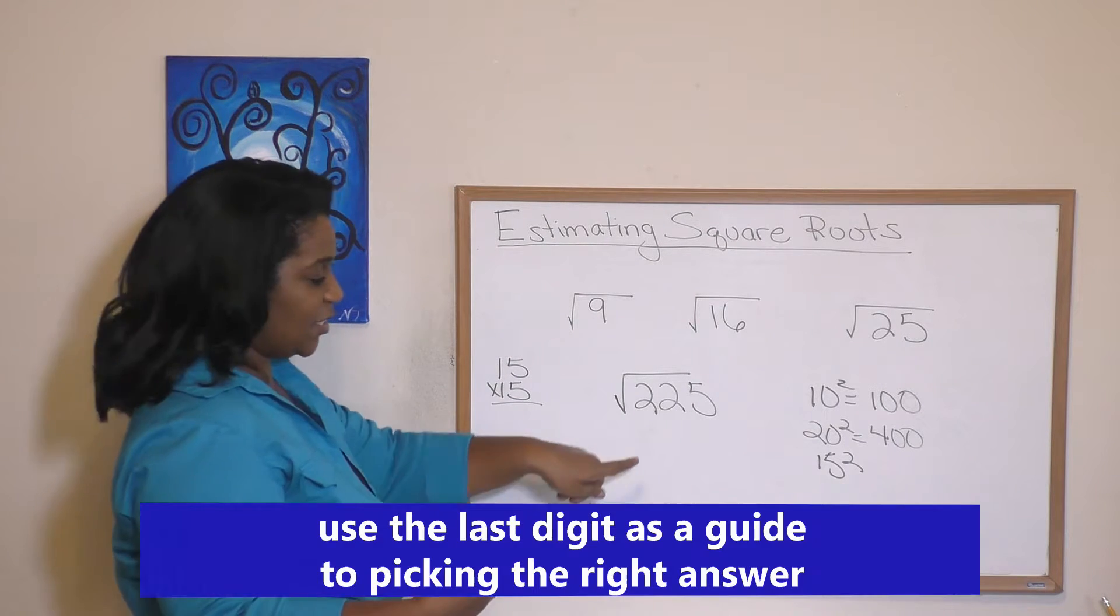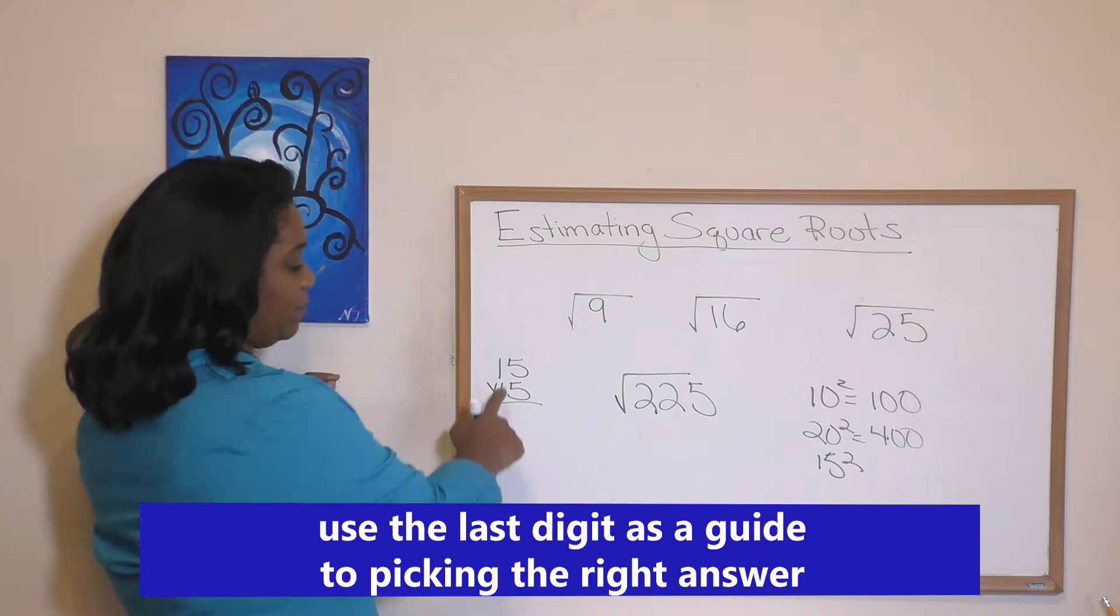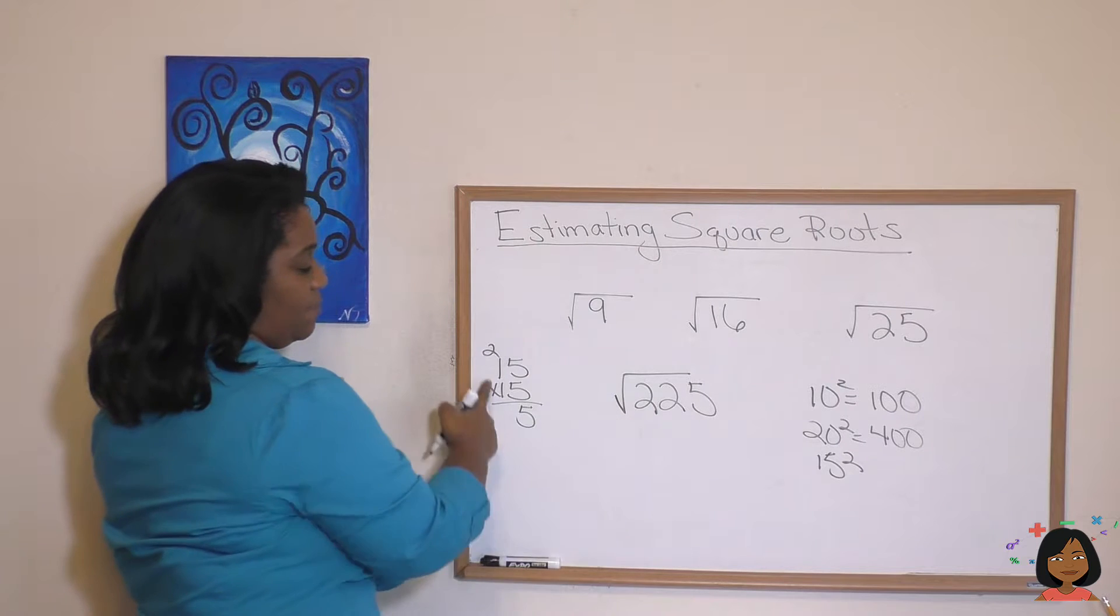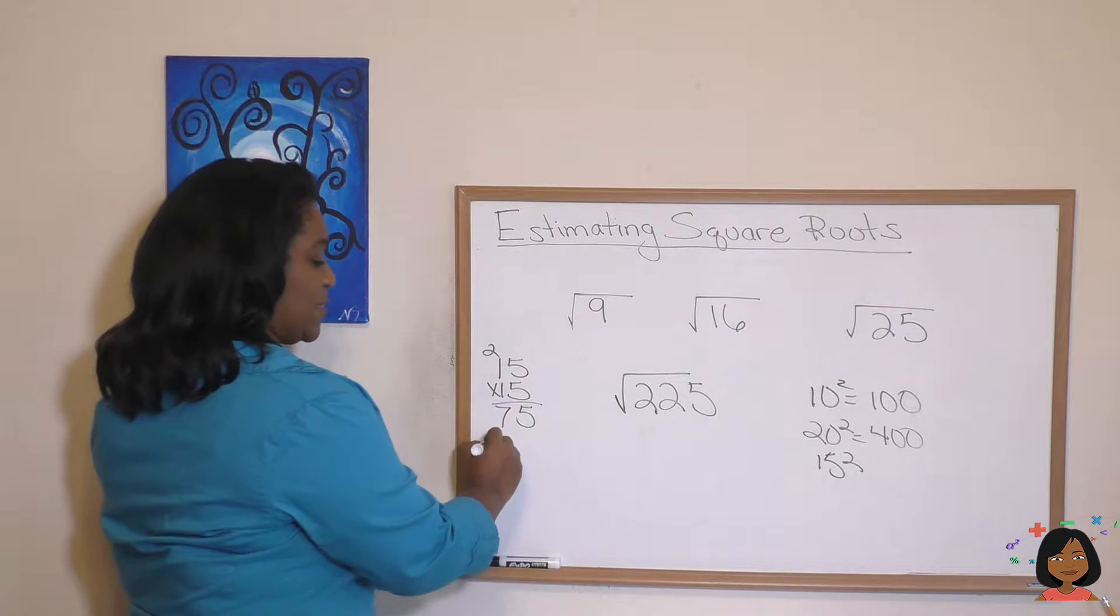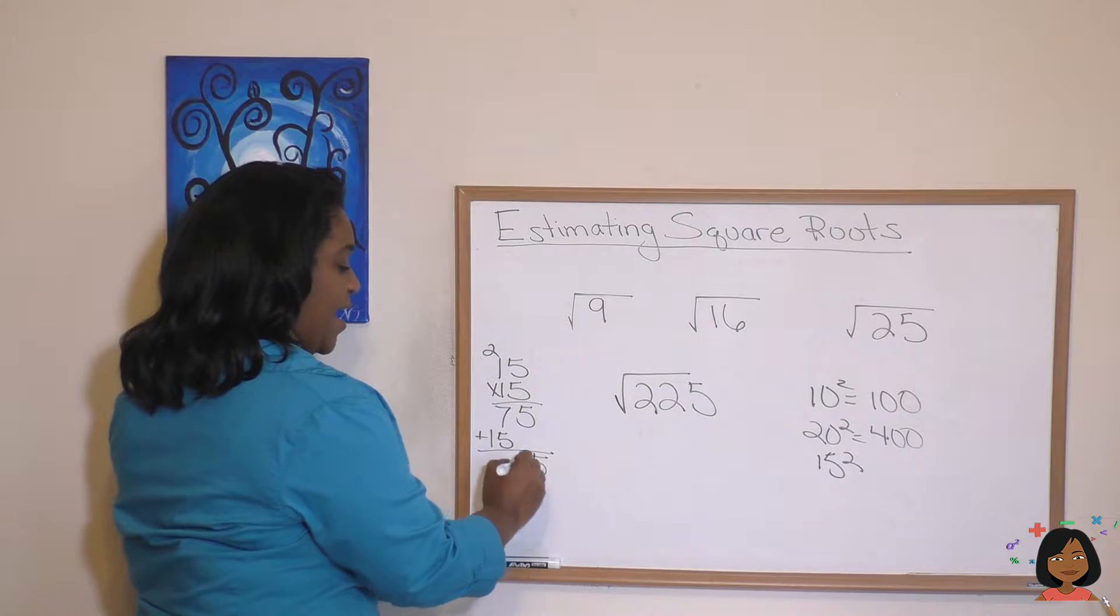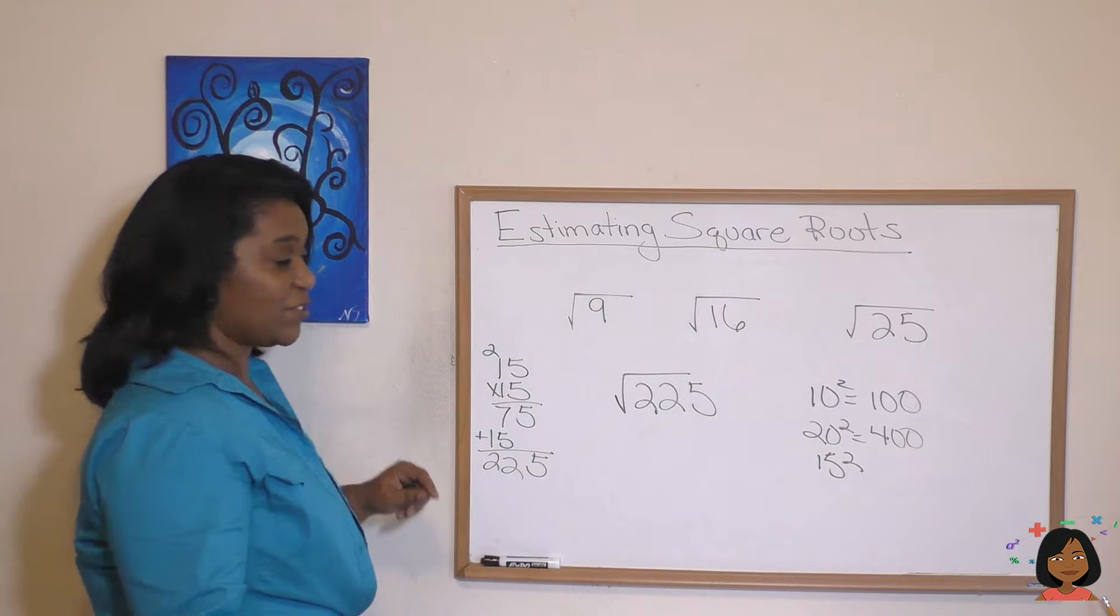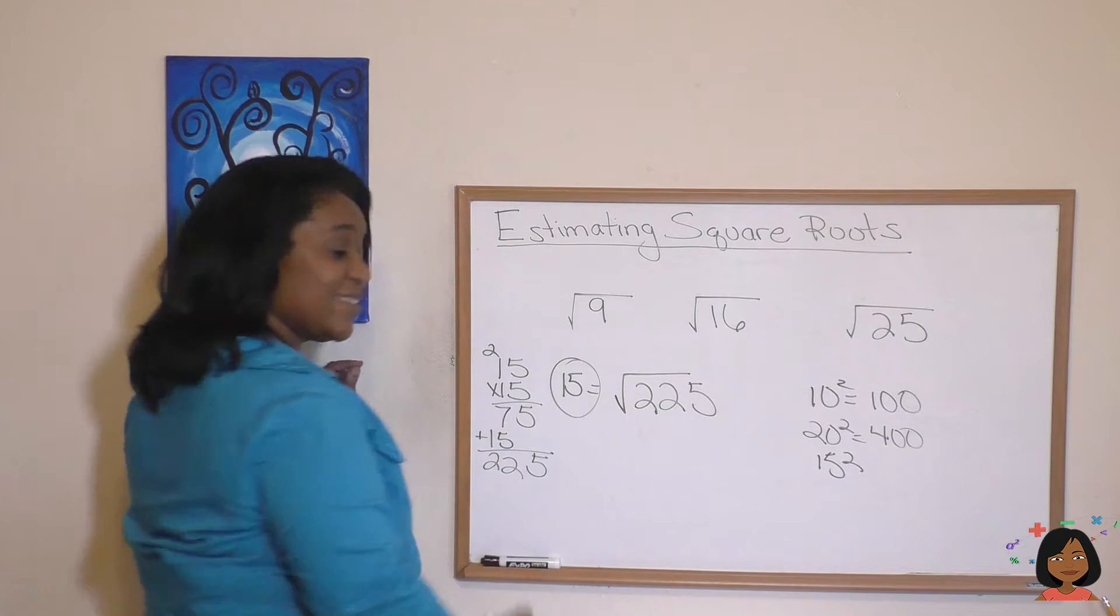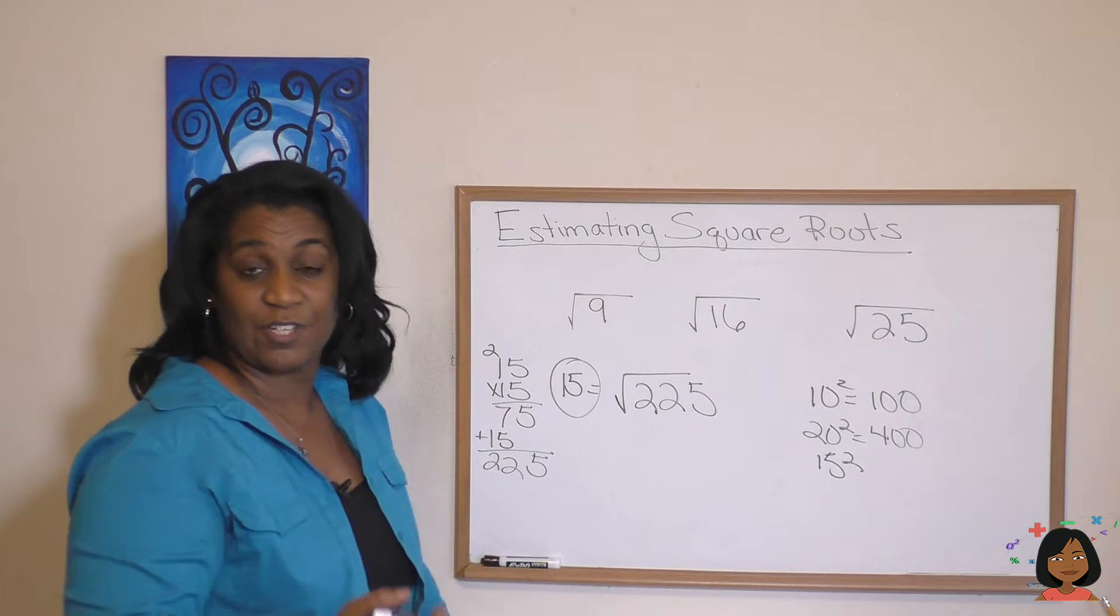5 times 5 is 25. See, there's the 5 that I need. 5 times 1 is 5, plus 2 is 7. And then I'm going to bring down the 15. And if I add, yes, we will see I got to 225. So the square root of 225 is 15. Estimating helps you figure out what number to shoot for and to give it a try.